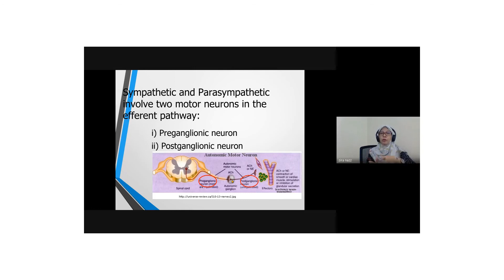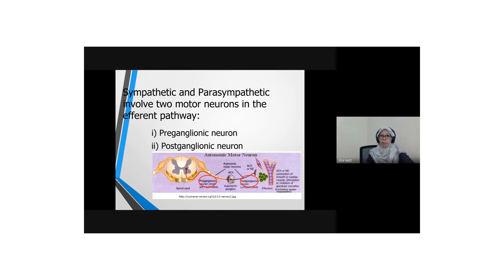Take note on the length of the preganglionic neuron, which is longer compared to the postganglionic neuron, which is shorter for the parasympathetic. Parasympathetic is more towards a calming condition — rest.